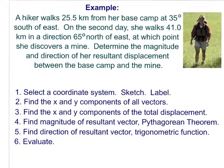Here's an example: a hiker walks 25.5 kilometers from base camp at 35 degrees south of east on day one. On day two she walks 41.0 kilometers at 65 degrees north of east, where she discovers a mine. Determine the magnitude and direction of her resultant displacement between base camp and the mine. First, select a coordinate system, sketch the problem, label everything, and write down what you know.